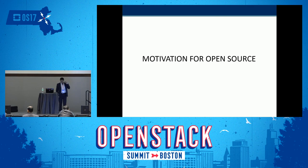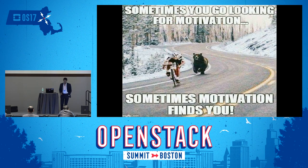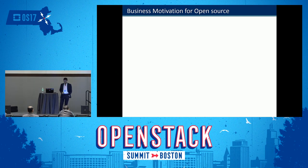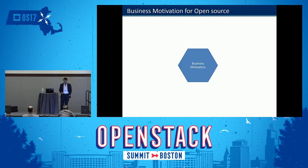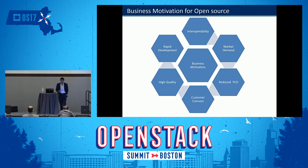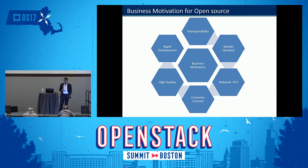Let's look at the motivation for open source. Sometimes you go looking for motivation and sometimes motivation finds you — that's the code for open source. On the business motivation side, the first is interoperability. Most companies working in closed source are going for open source because they would like their solutions to be interoperable with others. Interoperability essentially means collaboration, and collaboration is one motivation for organizations to go for open source.